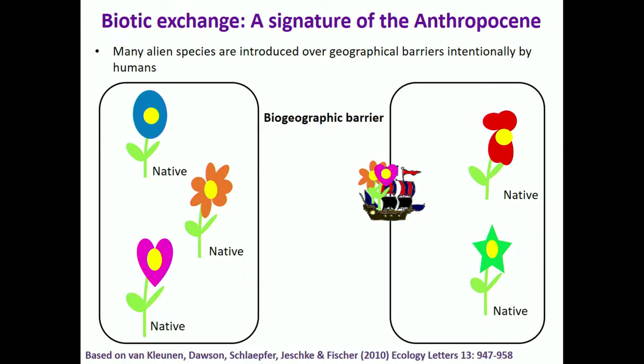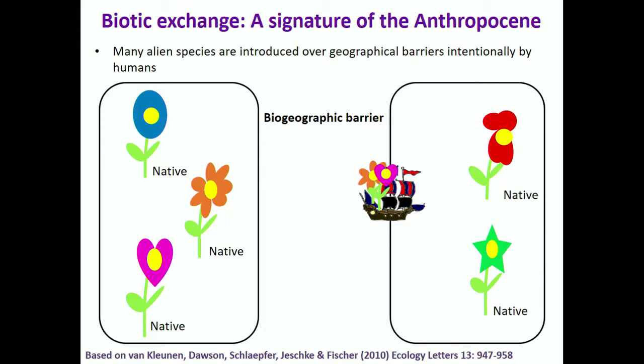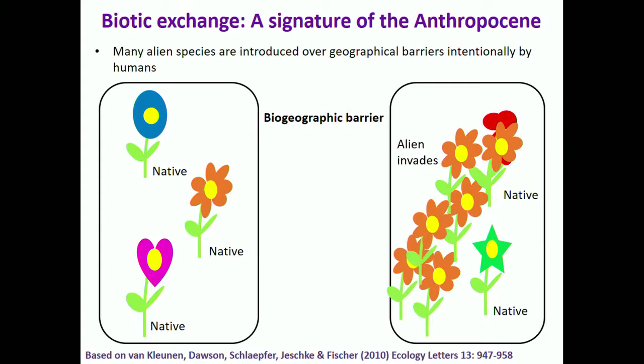We've introduced many alien species over geographic barriers, intentionally or unintentionally, and some of those species, once introduced, are able to establish their own self-sustaining populations. Some species might actually increase in abundance and spread within the new range and become what we call invasive.